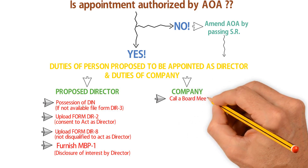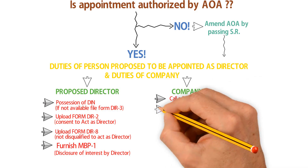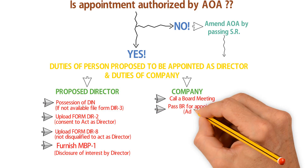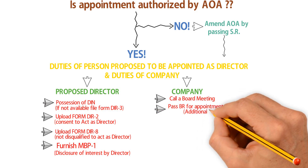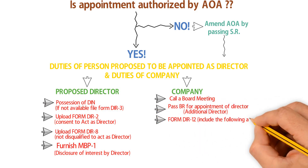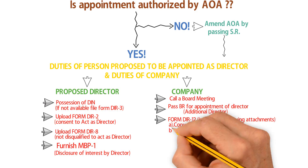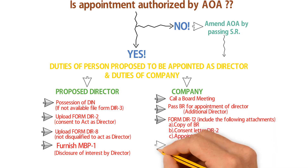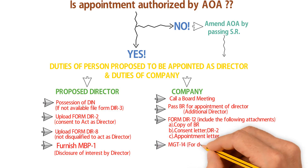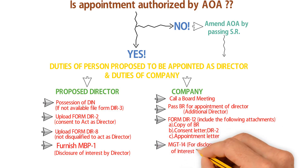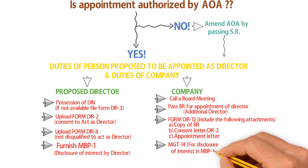Duties of the company: Step 1 — call a board meeting. Step 2 — pass a board resolution for the appointment of the director. Step 3 — upload Form DIR-12 to inform the ROC about such appointment. Lastly, upload Form MGT-14, which signifies that the director has disclosed their interest in various entities to the company.